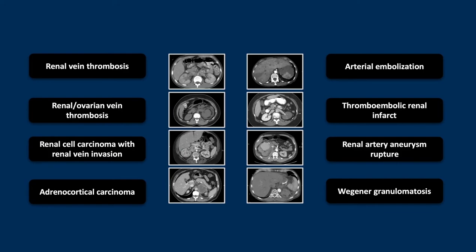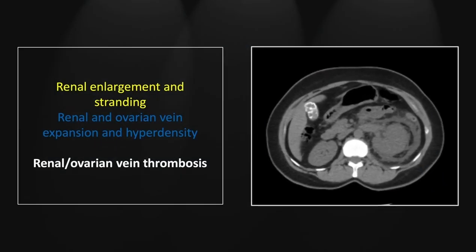Our next case is a renal and ovarian vein thrombosis shown on a non-contrast scan. There's obviously extensive perinephric fluid and stranding suggesting some renal pathology. There is significant enlargement and hyperdensity of the left renal vein, allowing you to make the diagnosis of renal vein thrombosis even on this non-contrast study.